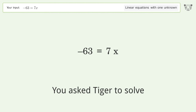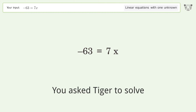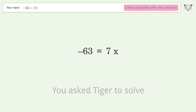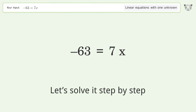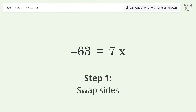You asked Tiger to solve this — it deals with linear equations with one unknown. The final result is x equals negative 9. Let's solve it step by step. Swap sides.